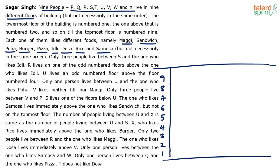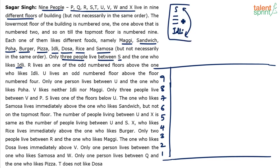Let's convert the English statements into pictorial representations. First: only three people live between S and the one who likes idli — so three people between S and idli. We don't know the order, so we represent it as S — — — — idli, and the sequence can be interchanged.